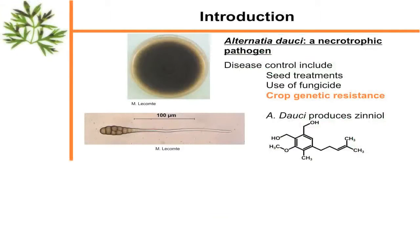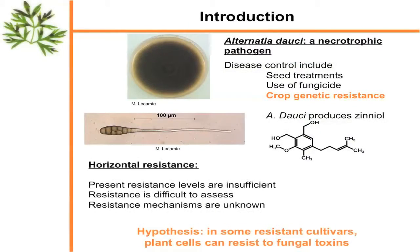Alternaria dauci is a necrotrophic pathogen — one of the worst leaf pathogens of carrot. Disease control classically includes seed treatments, use of fungicide, and crop genetic resistance. Importantly, Alternaria dauci produces zinniol, a secondary metabolite described as a fungal toxin. Plant resistance to the toxin is partial resistance, horizontal resistance, and non-race-specific, so they are insufficient.